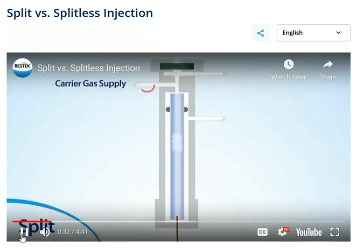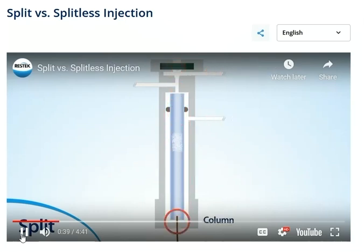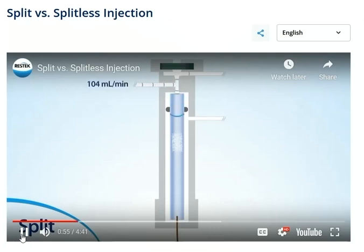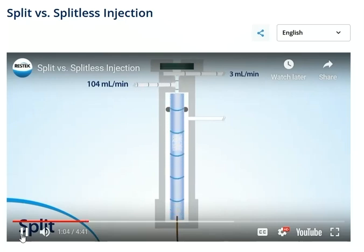Inside a split/splitless inlet, you will find the carrier gas supply, the septum, the septum purge, the split vent, the liner, and the column. Now we'll start the gas flow and simulate a split injection. The gas entered the inlet with a total flow of 104 milliliters per minute. A small amount — 3 mils per minute — passed through the septum purge to reduce possible contamination from the septum, while the rest continued onto the liner.